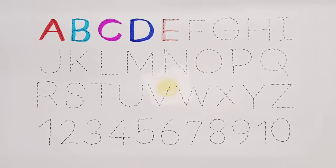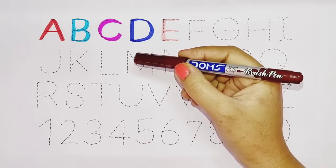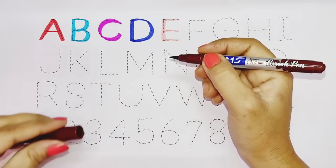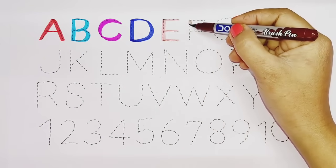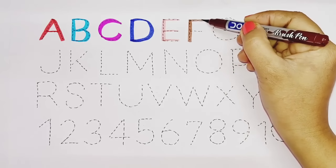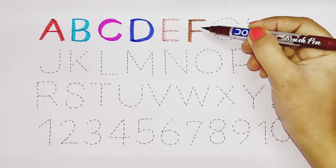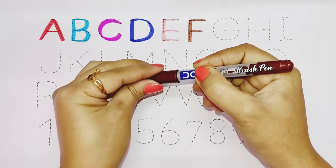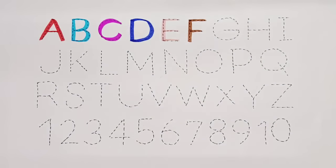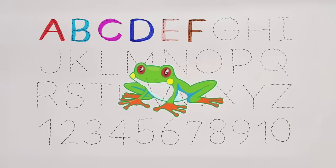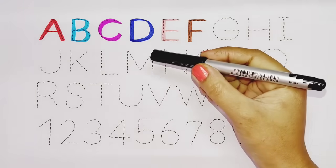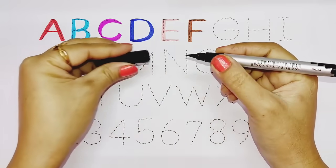E, E for Egg, brown color. F, F for Frog, black color.